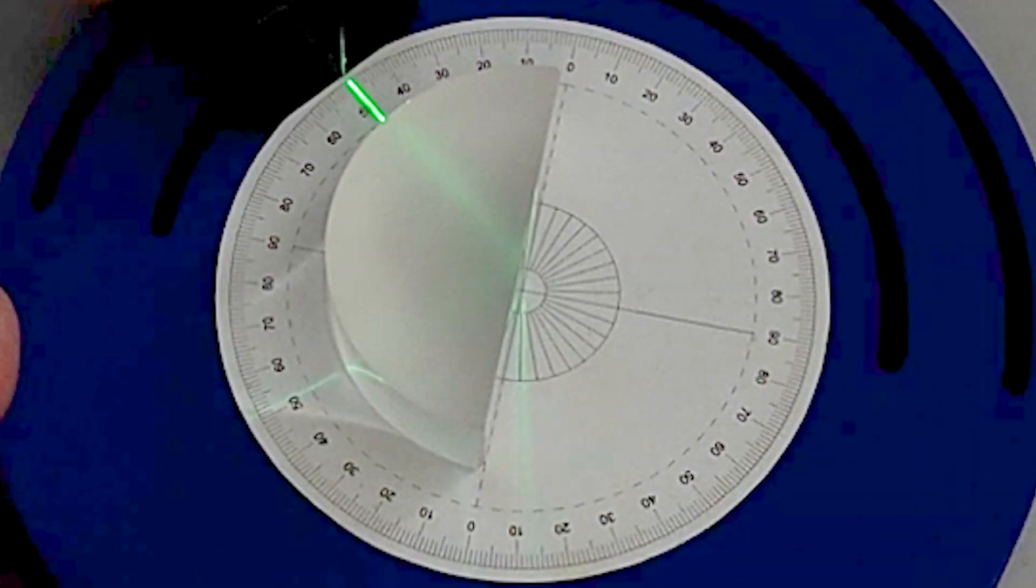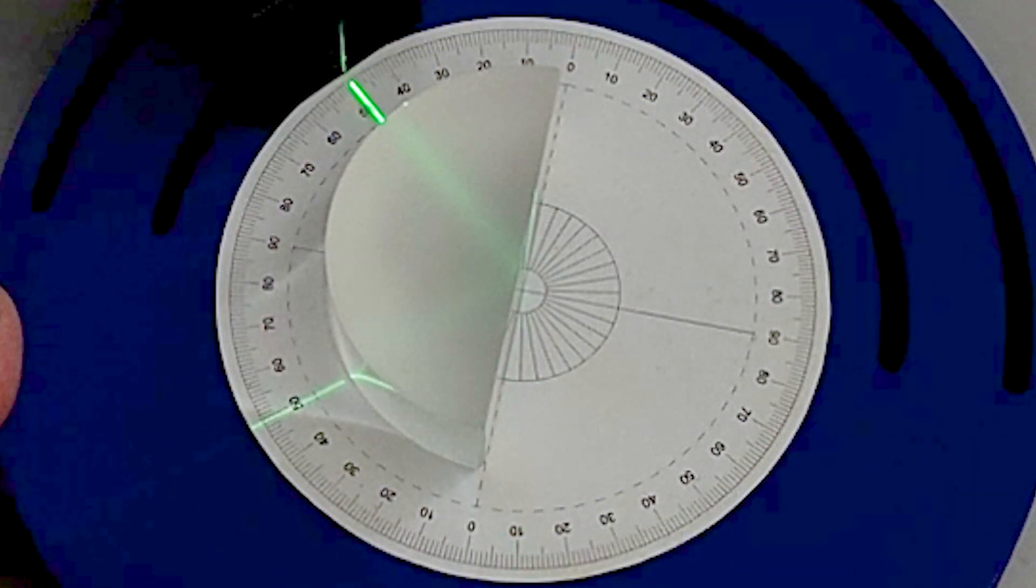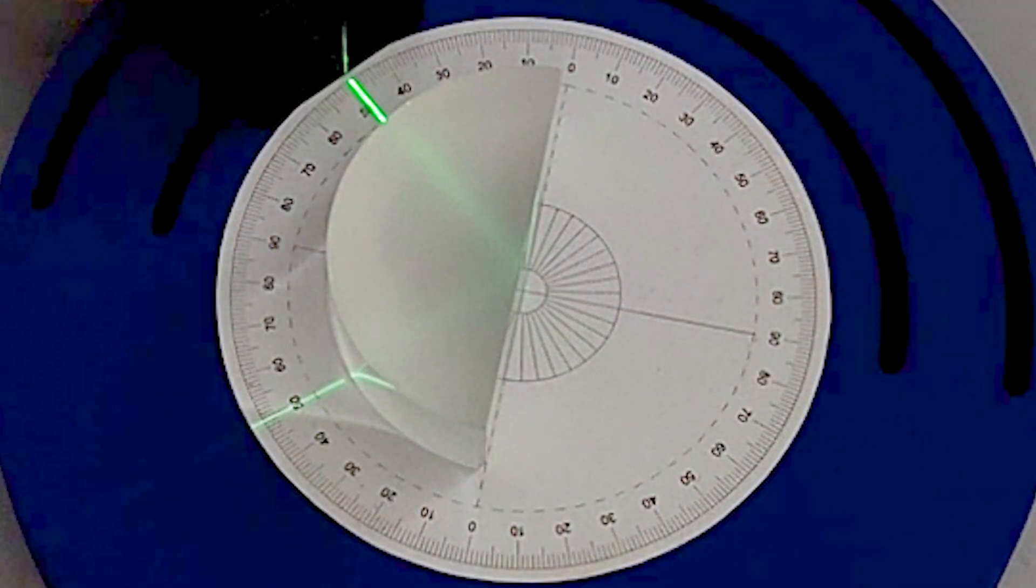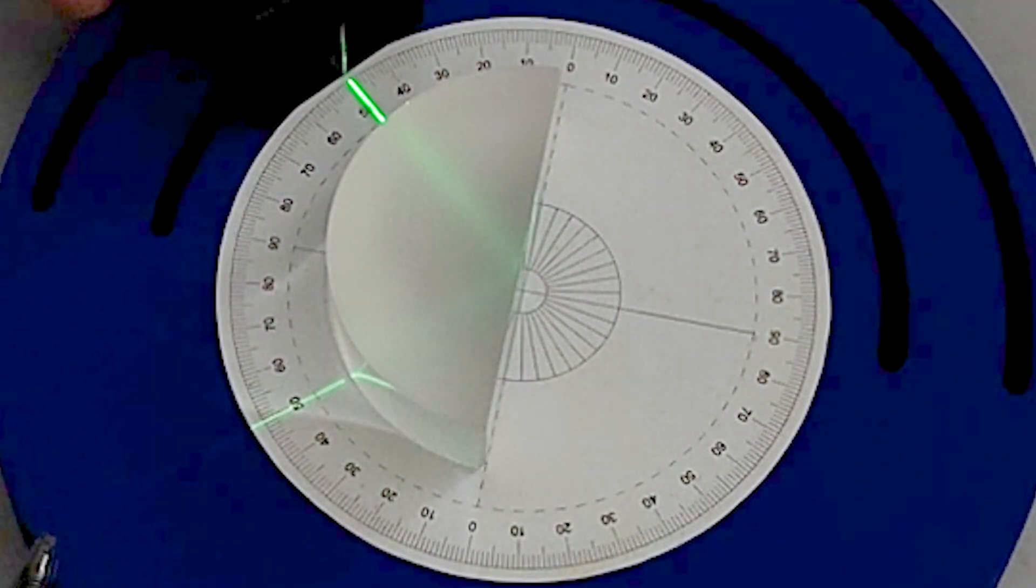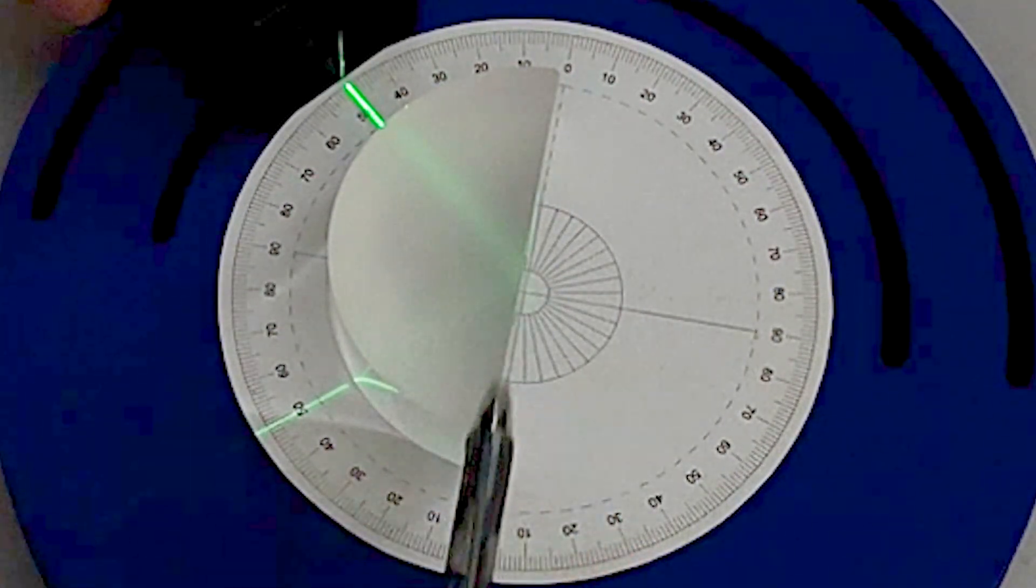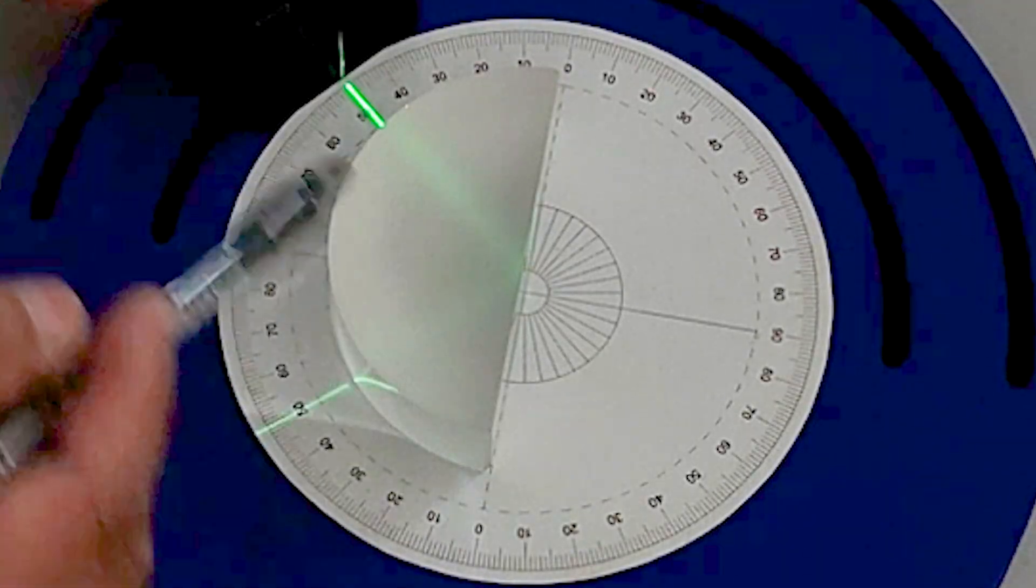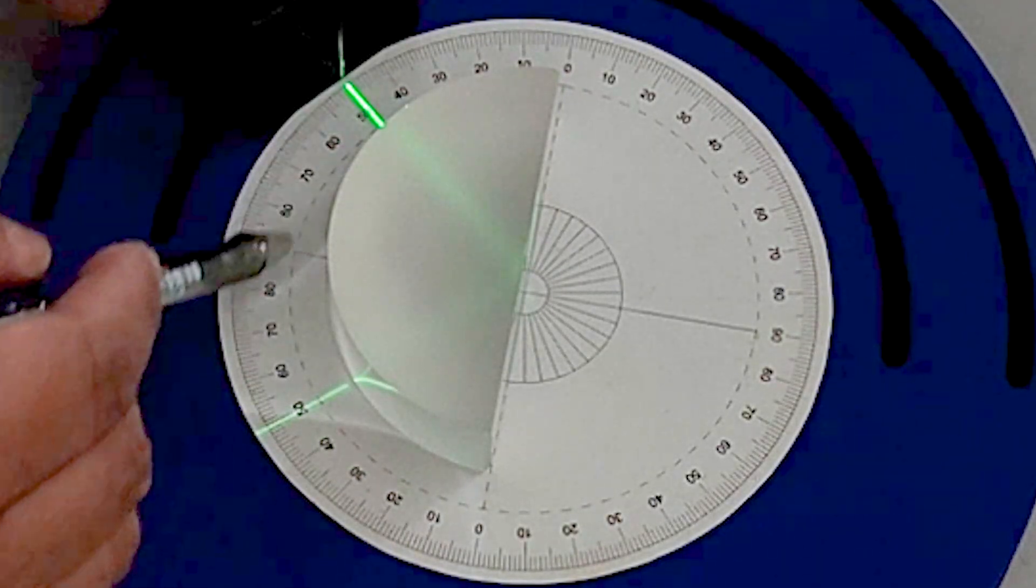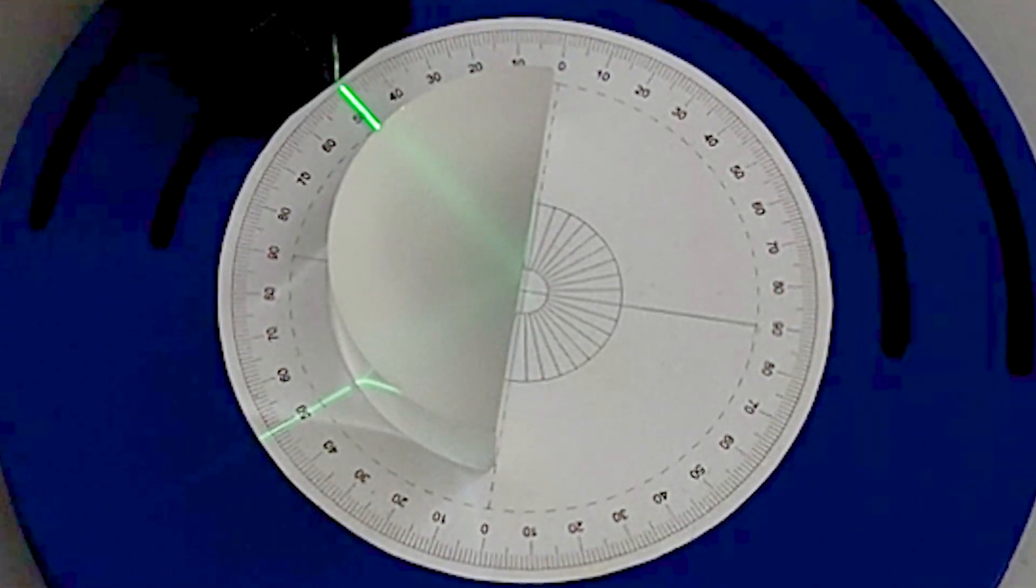We can see that total internal reflection starts to occur, and the angle of refraction is 90 degrees. This angle here is the critical angle.